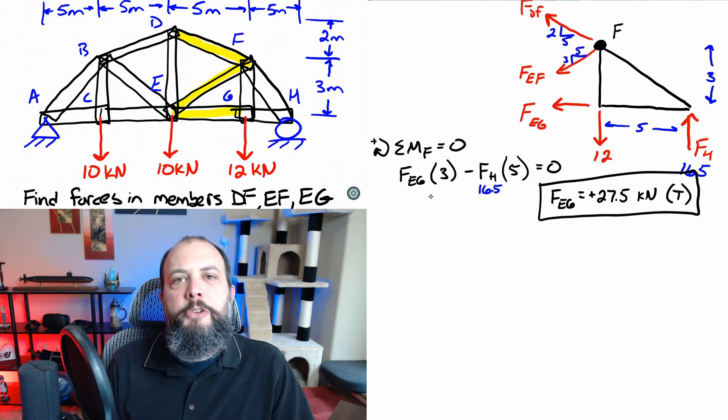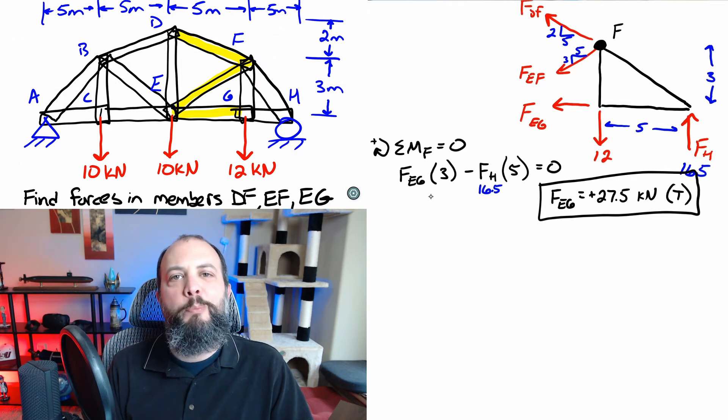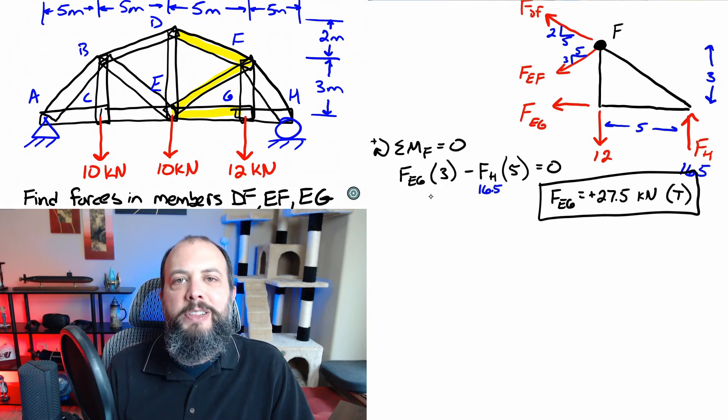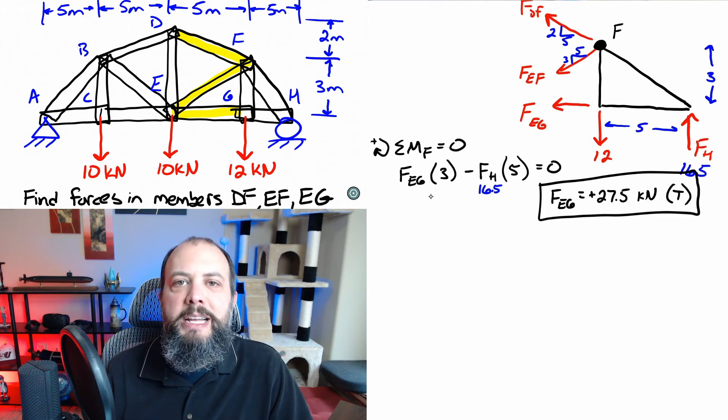Now normally at this point after doing a moments you would usually do a sum of forces in X or Y. However when we look at the two remaining unknowns you can see that they both are diagonal and so they're both going to have X and Y components that's going to leave us solving a set of simultaneous equations. So there's a clever way to do this with another moment that will actually let us isolate one of those forces by itself.